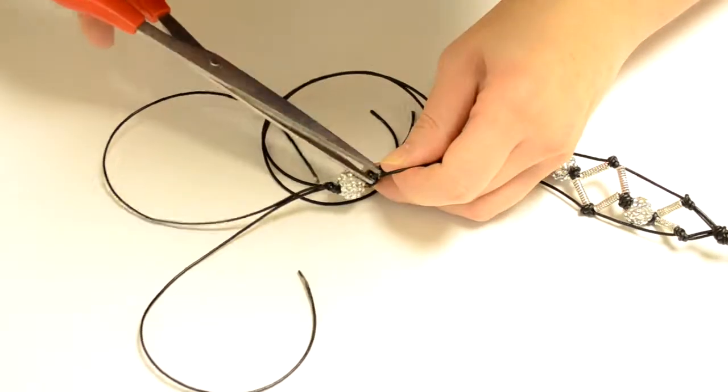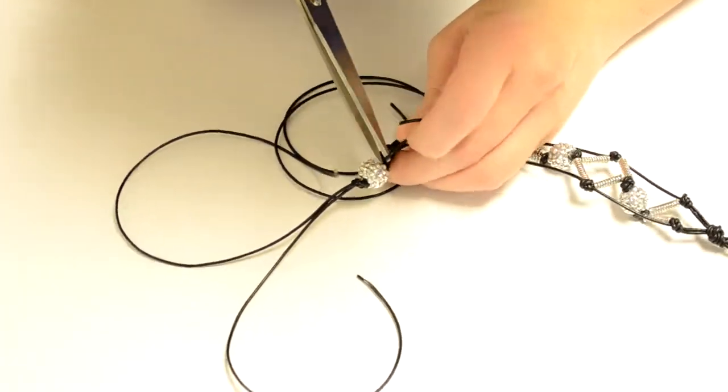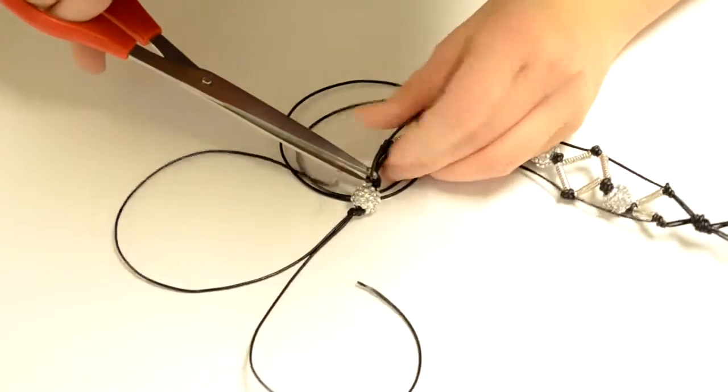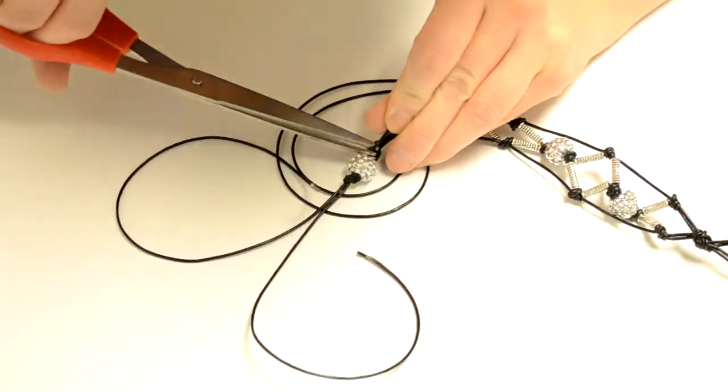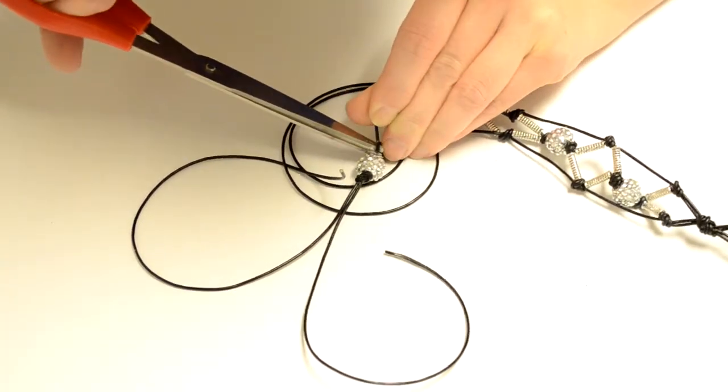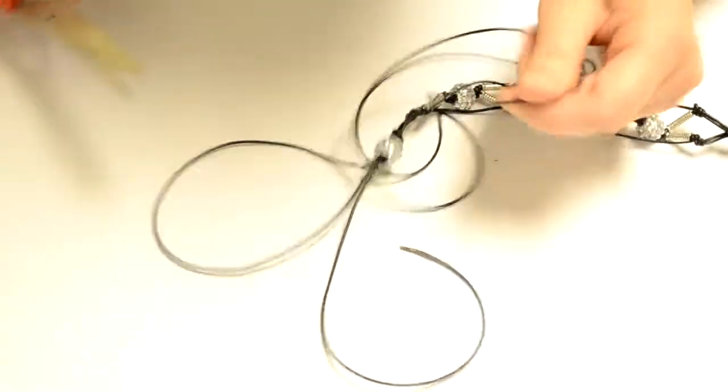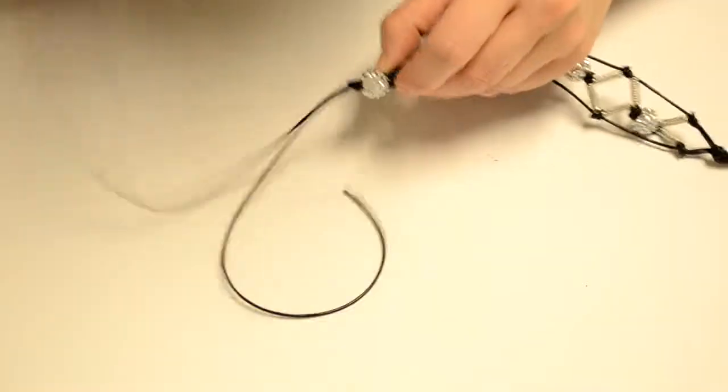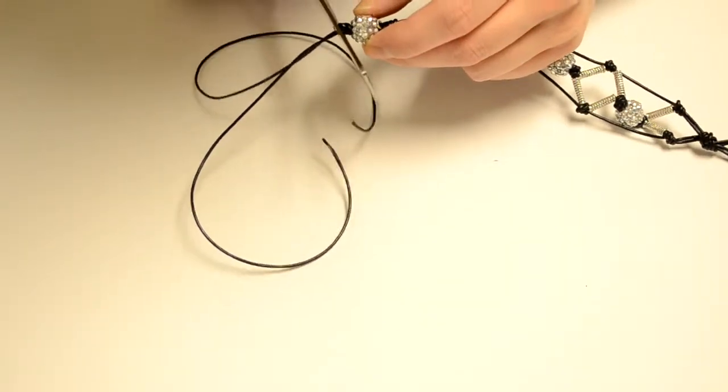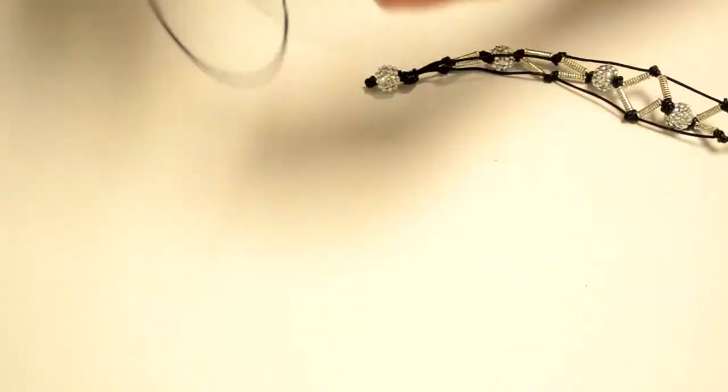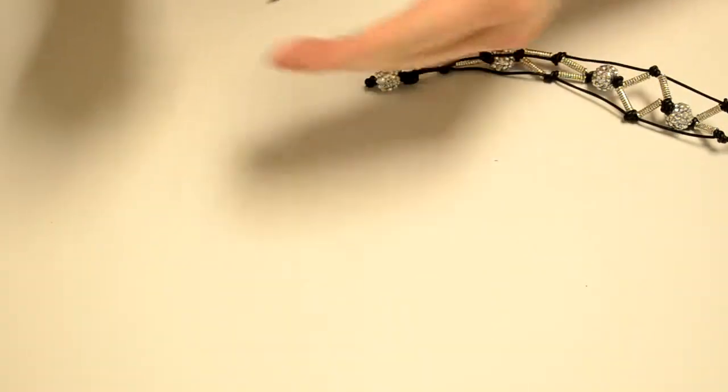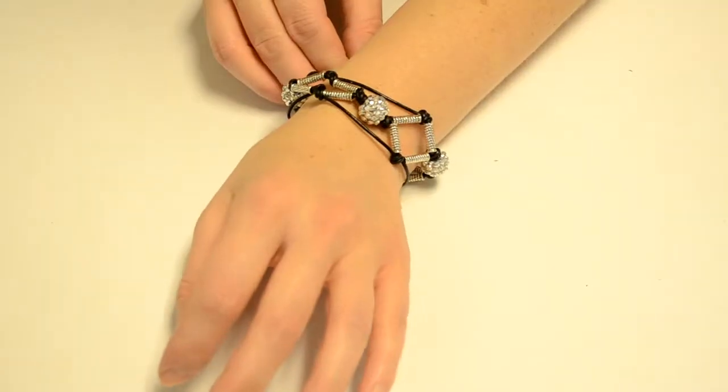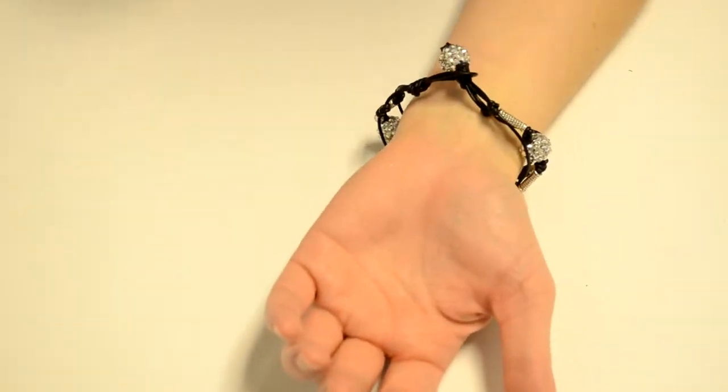So I'm going to trim two here, the two that don't go through the disco bead. So you can trim those two off. And then trim the other two down here. And you can use those scraps later for another project. So you can just set those aside. And that's the front. And that's the back. So that's it.